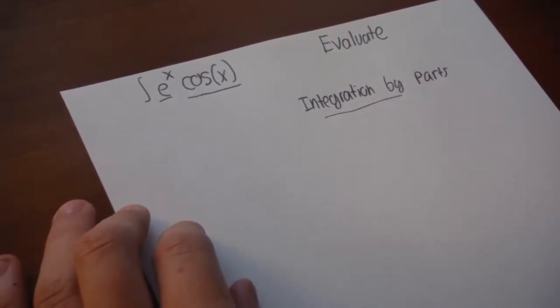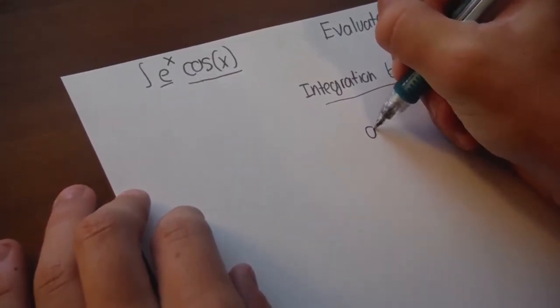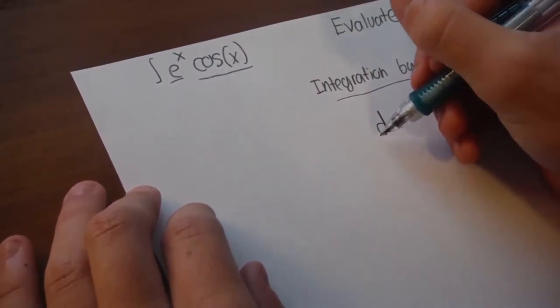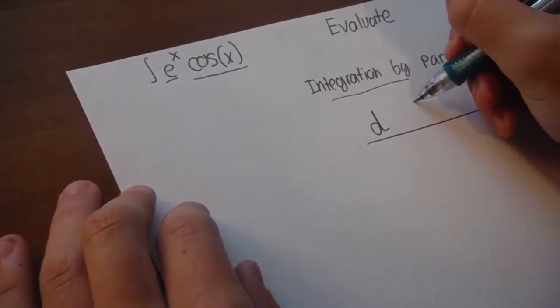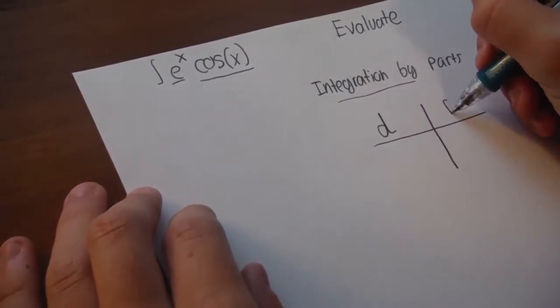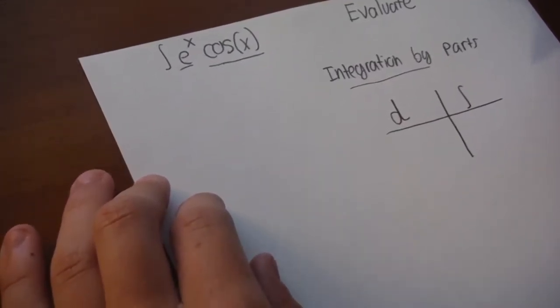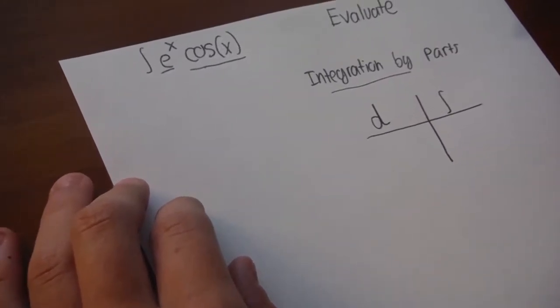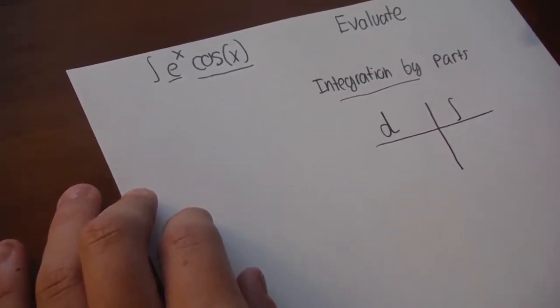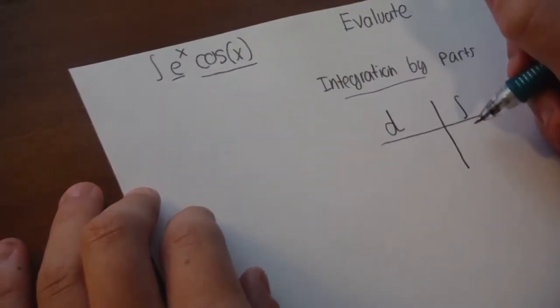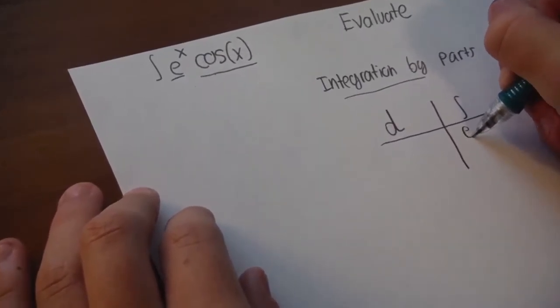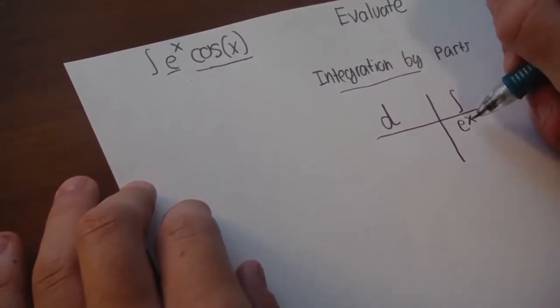So the best way to do this is to make a table with one part doing the derivative, d, and another part doing the integral. So what we want to do is get it so that e to the x, which won't really change, we'll put that on the integral side, because the integral is a little bit harder,